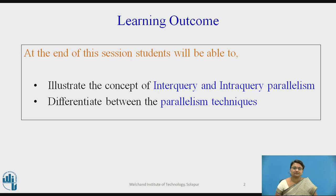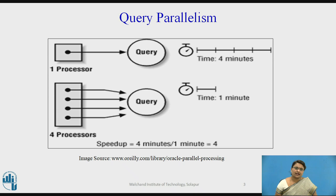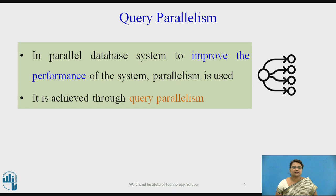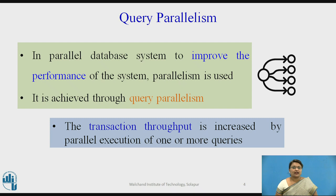Starting with query parallelism — what exactly does query parallelism mean? A single query on one processor takes 4 minutes for complete execution. But if the same query is given to 4 parallel processors, the query executes in 1 minute — that is 4 divided by 4. In a parallel database system, query parallelism is used to improve performance and increase transaction throughput.